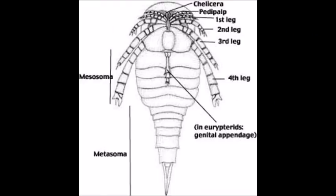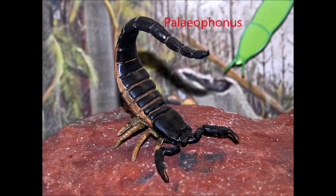And finally, we've reached the scorpions. Scorpions are identified by their three-segmented chelicerae — remember, these are appendages in front of their mouths — grasping pedipalps, which are their claws, a segmented abdomen or mesosoma, and a segmented tail or metasoma. The earliest scorpions are dated to 430 million years ago, or the Silurian, such as Palaeophonus.